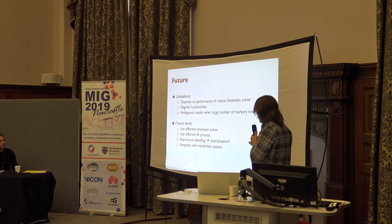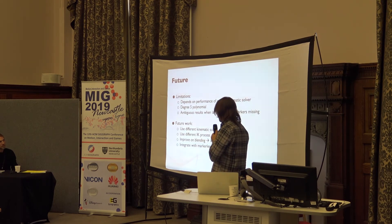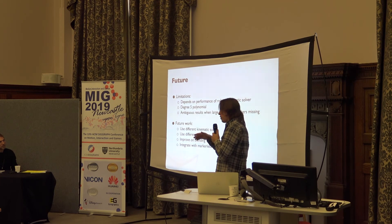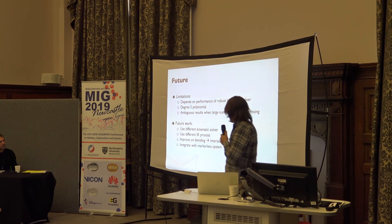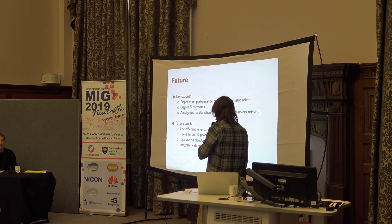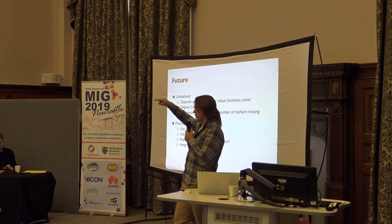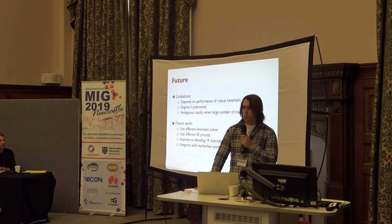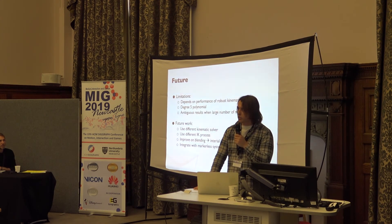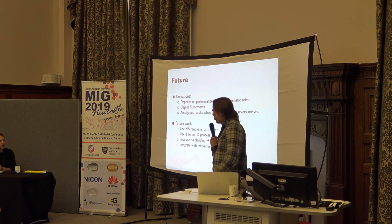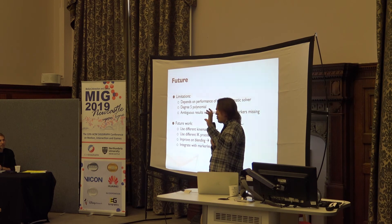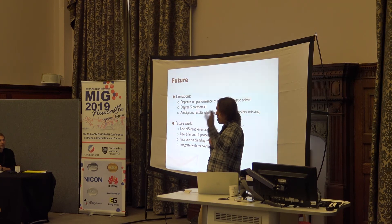In terms of future work, we could use a different kinematic solver or a different IK process — that's used in the original Holden 2018 and is a performance bottleneck. We could improve on the blending; one idea is to use inertialization, a technique from motion matching, to blend the curve so that jerk is zero, which would remove some issues. Finally, one possible avenue is to integrate with markerless systems — since we already have video from the live shoot, we could potentially use it to generate markerless joint transformations and only use them when other methods are completely broken.